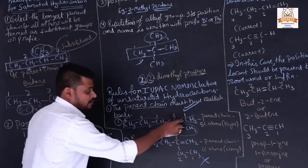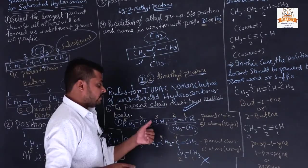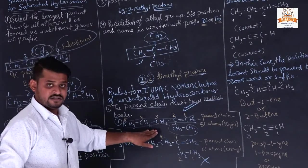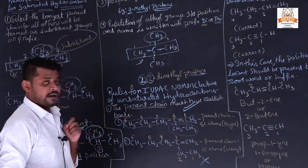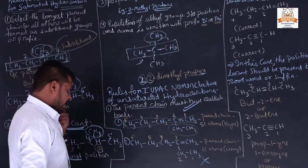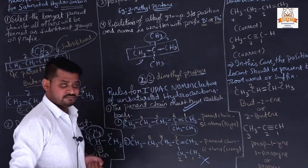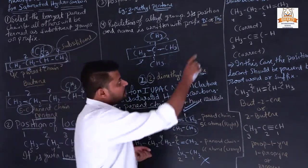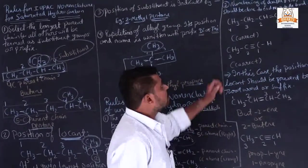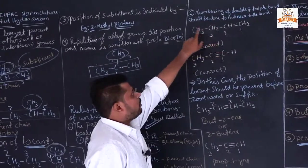The chain with multiple bonds has five carbon atoms, so it is taken as the parent chain and called pentane. The second rule: numbering of double and triple bonds should be done from the end nearest to the bond — we assign the position nearest to the multiple bond.